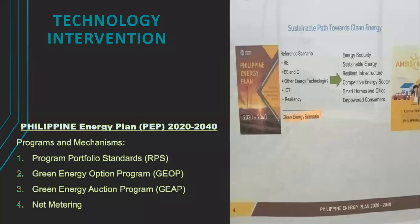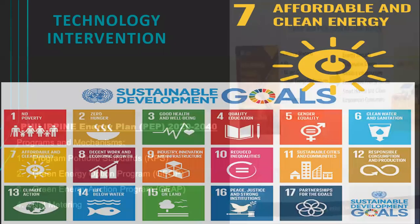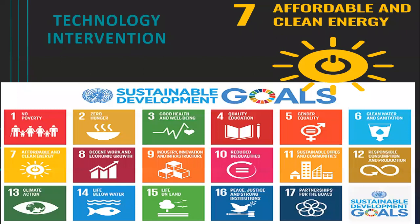The PEP also has programs and mechanisms to help curb greenhouse gas emissions, like the Renewable Portfolio Standards (RPS), the Green Energy Auction Program, and Net Metering. These are also part of the UN Sustainable Development Goals, specifically Goal Number 7: Affordable and Clean Energy.